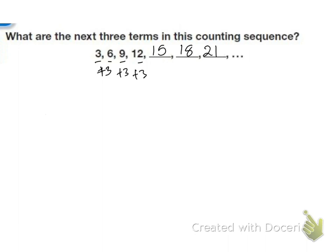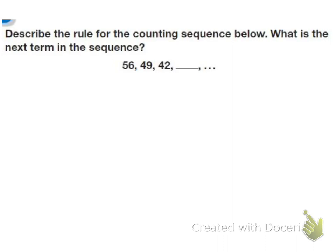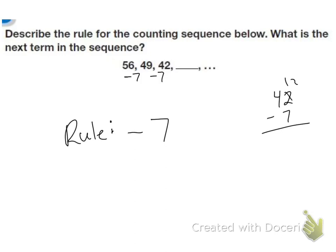Those are also the numbers we count by when we count by threes. The next problem says: describe the rule for the counting sequence below, and what is the next term in the sequence? The sequence goes fifty-six, forty-nine, forty-two — so we're counting down. The rule is that we are going to subtract something each time. Fifty-six minus seven is forty-nine, and forty-nine minus seven is forty-two. So the rule is to subtract seven each time. Forty-two minus seven equals thirty-five.